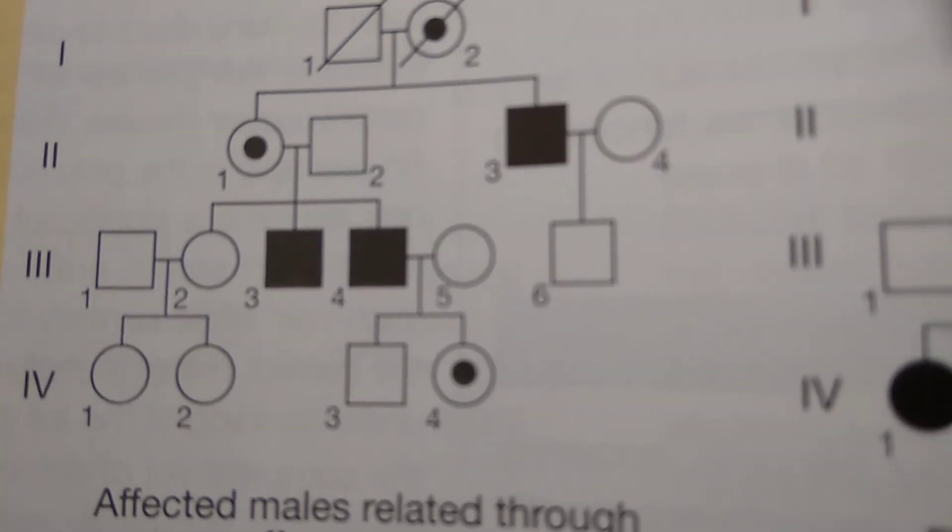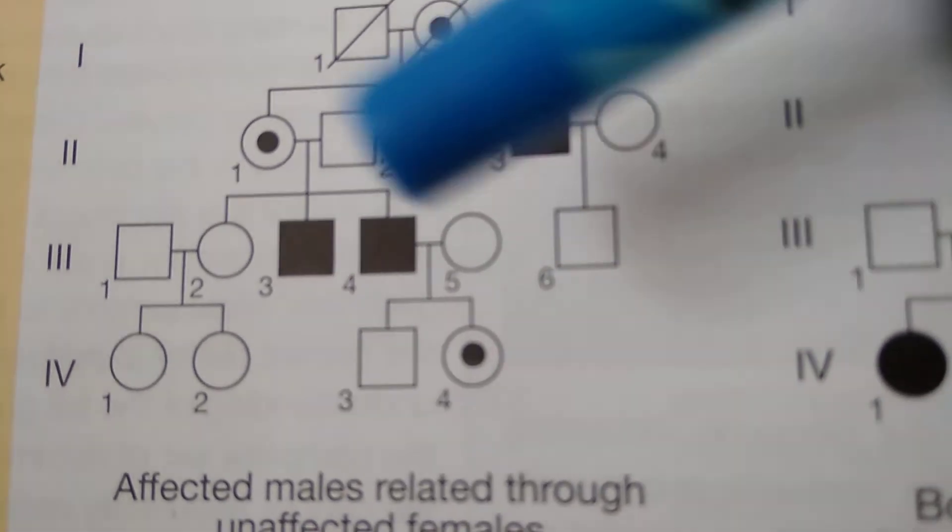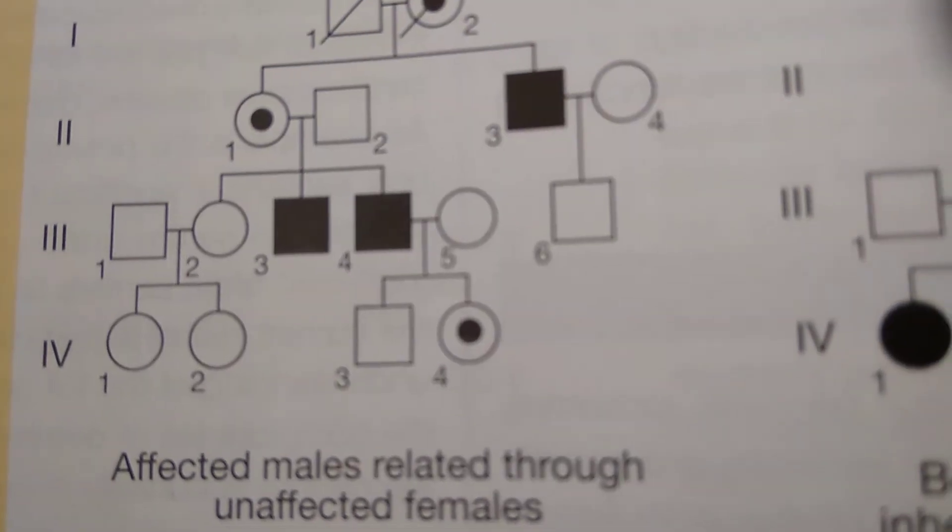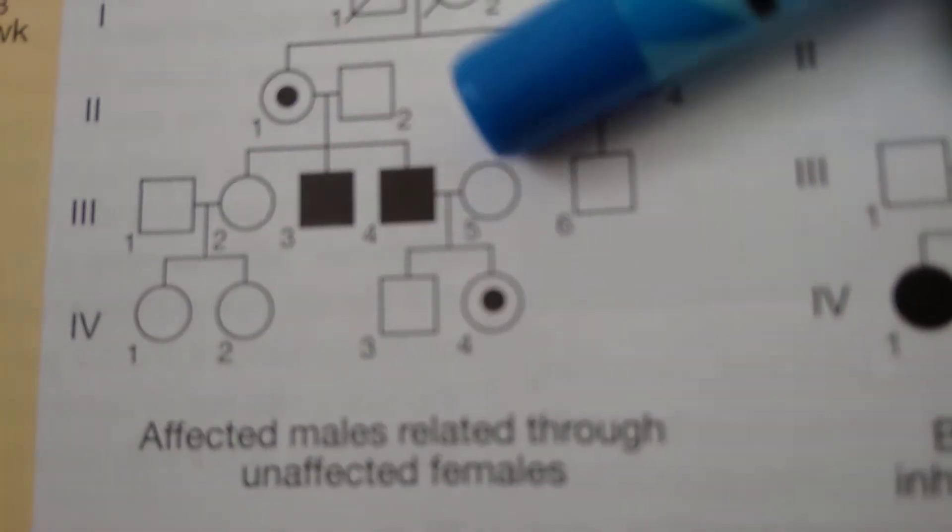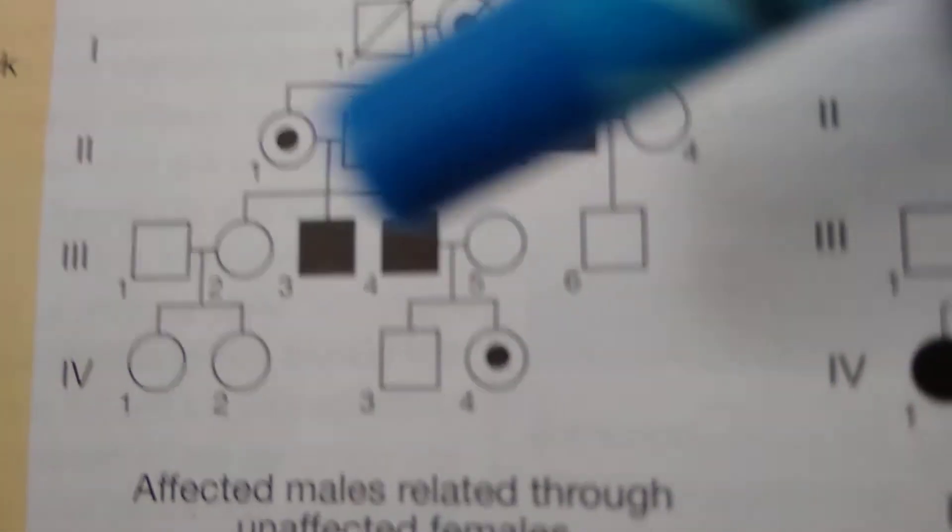Are you able to see clearly? Female carrier, affected male. Now female carrier, affected male. Female carrier, affected male. And then from the male comes again a carrier female. So clinically affected male to a female.